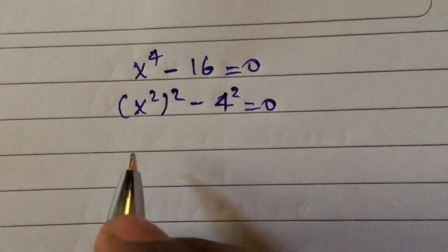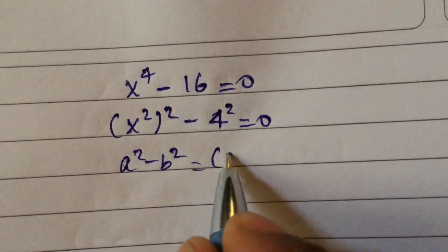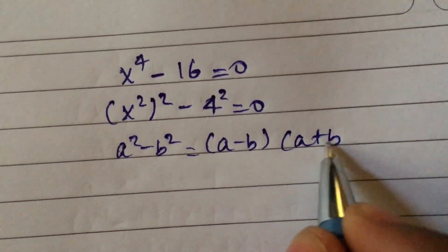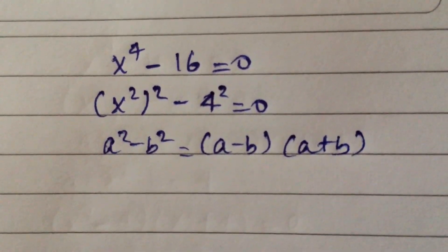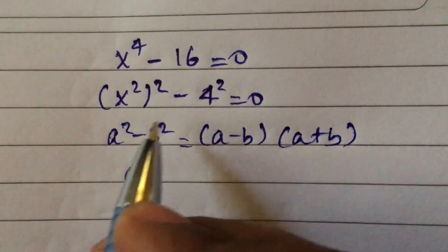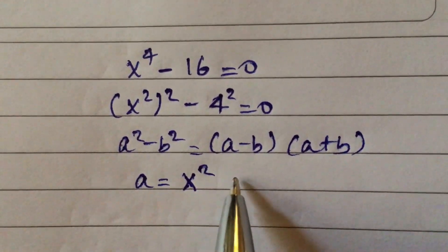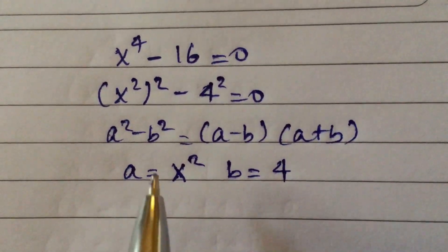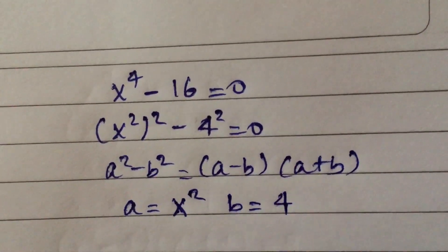Here we will apply the formula a squared minus b squared equal to a minus b times a plus b. The value of a equals x squared and the value of b equals 4.